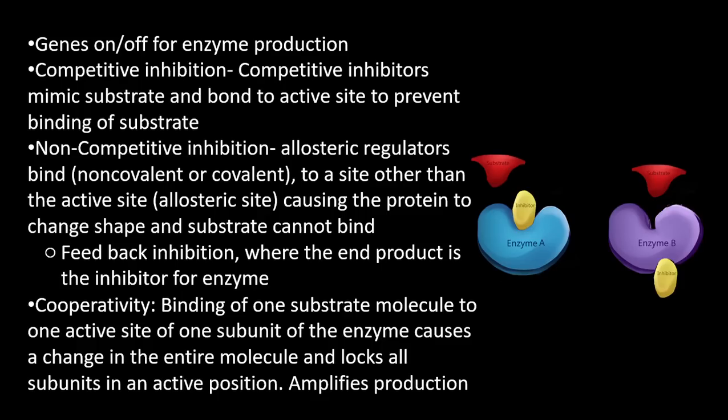Non-competitive inhibition causes the protein to change shape so the substrate cannot bind. Feedback inhibition is where the end product stops the enzyme from creating more, ensuring the cell doesn't over-produce. Cooperativity is when the binding of one substrate to one subunit causes a change in the entire molecule, locking all subunits into an active position, sometimes amplifying production.